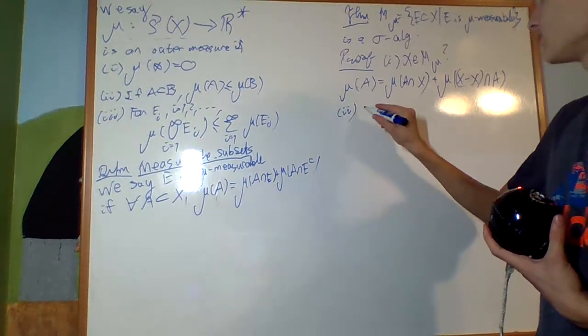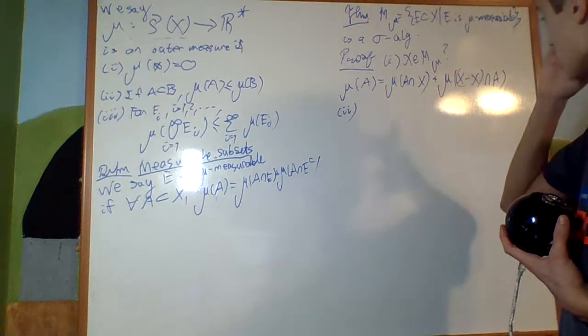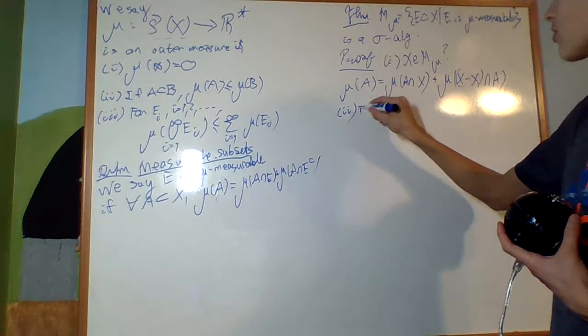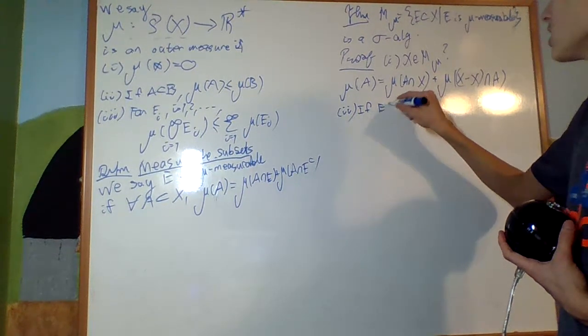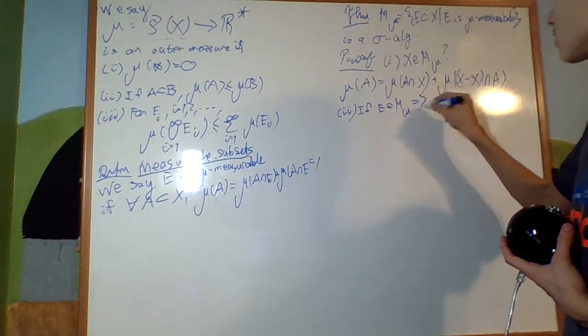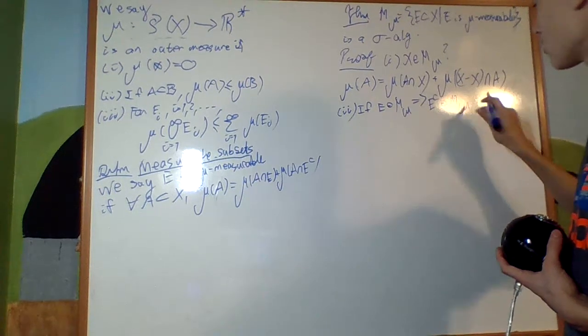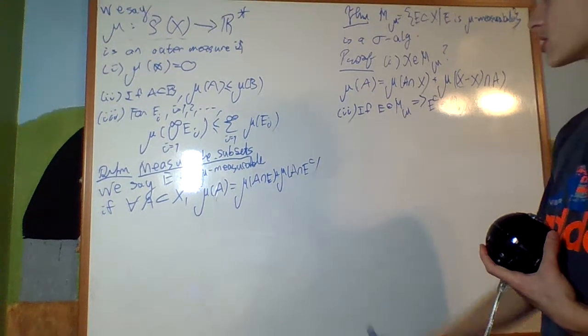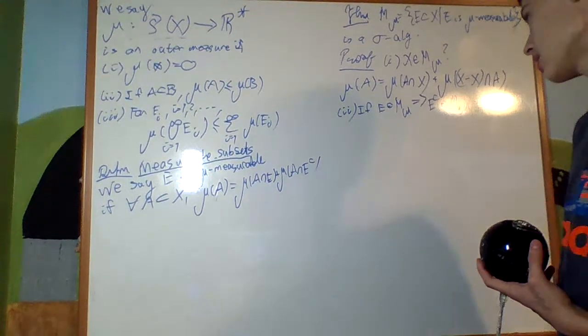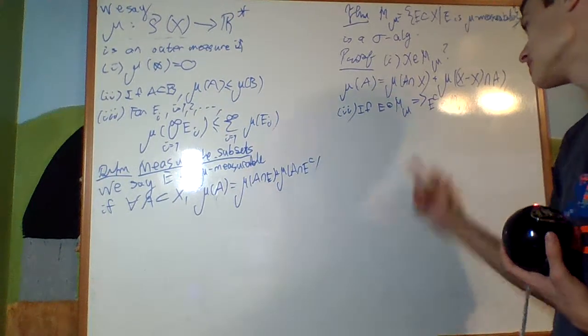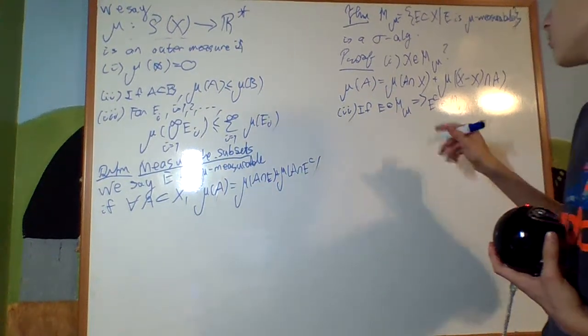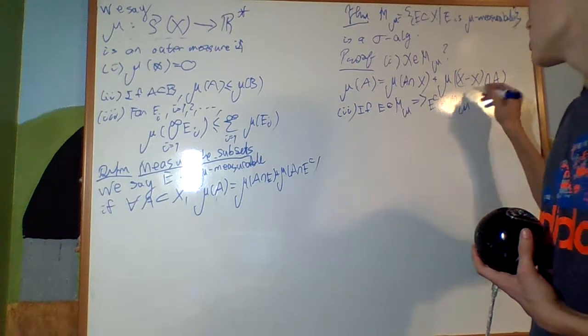Number two, is it the case that if E is an element of M_mu, implies that E complement is an element of M_mu? And by the way, E complement just means X minus E. I'm just gonna use this notation because it's easier.